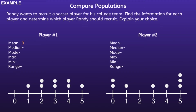Median. So we start with the low number, cross it out, and then move up to the high number. When we do this, we have two numbers left, and since they are both 3, we know the median will be 3. Mode — if we look at the line plot, we can see that there are 3 numbers that appear 2 times. So the mode would be 2, 3, and 4. Max, short for maximum — the maximum number will be 5. Min, short for minimum — the minimum number will be 1. And finally, range — if we take the max of 5 and subtract the minimum of 1, we can determine that the range will be 4.